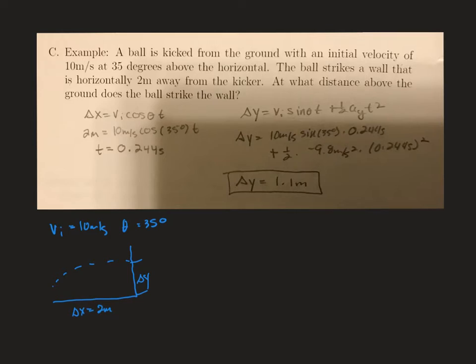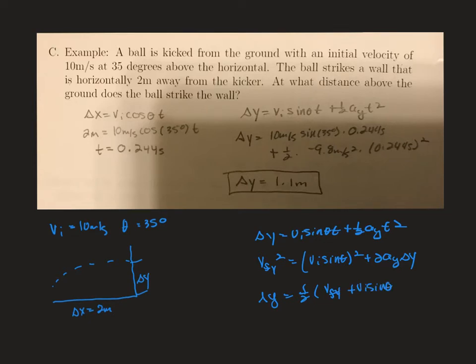Alright, so if we look through our equations for the y directions that have delta y, we have delta y is equal to v initial sine of theta t plus 1 half a of y t squared. We have v final in the y squared equals v initial sine of theta squared plus 2 a of y delta y, and then we have delta y is equal to 1 half v y final plus v i sine theta times t.